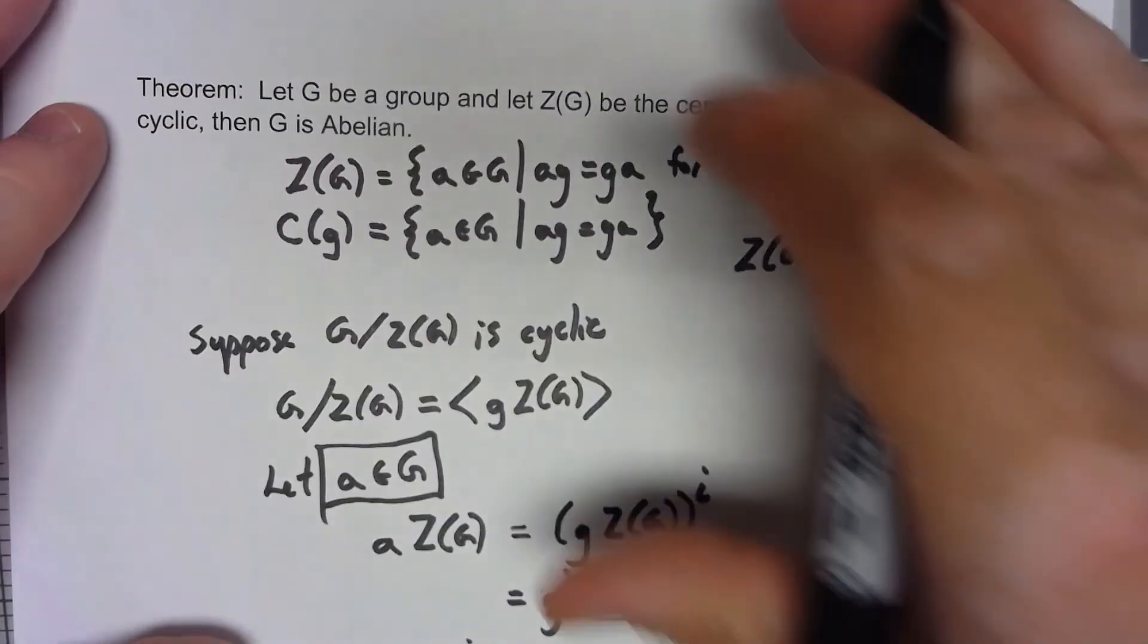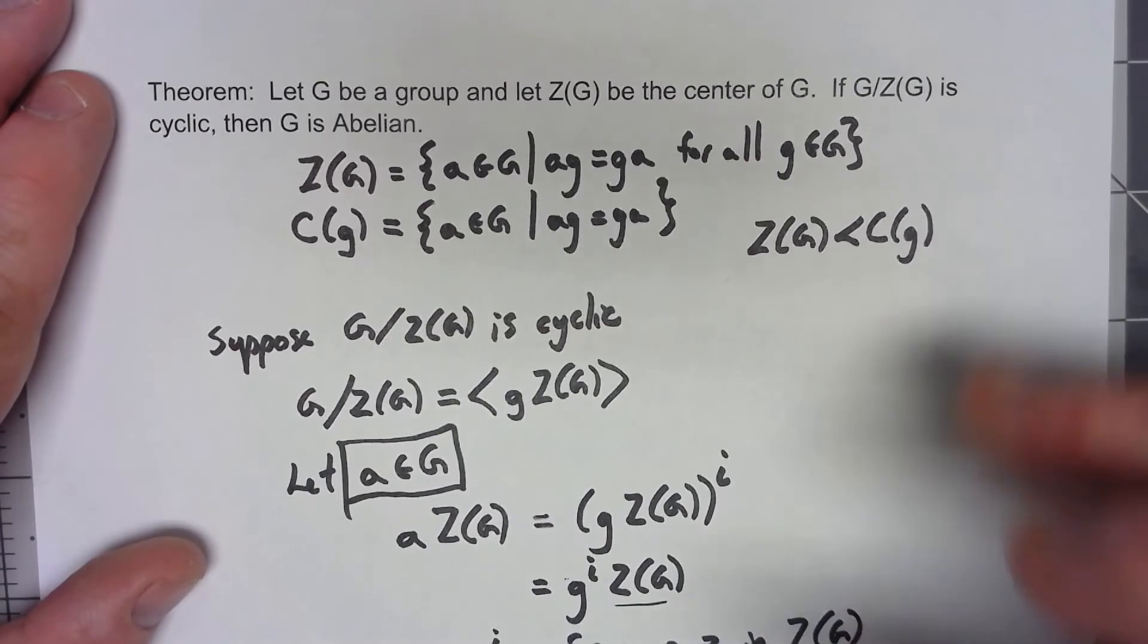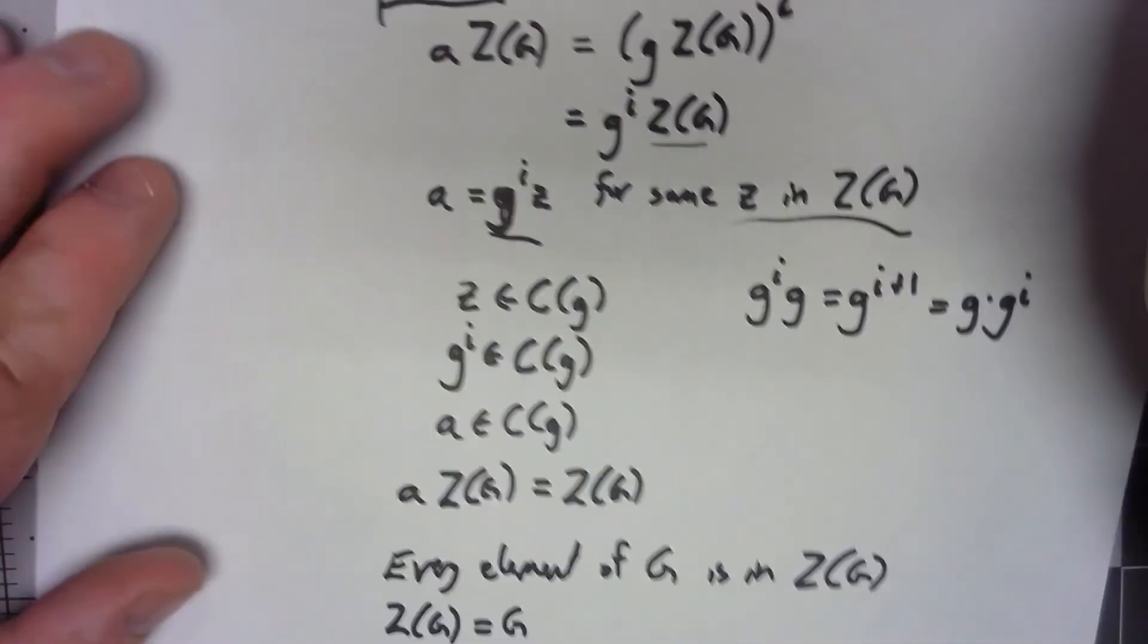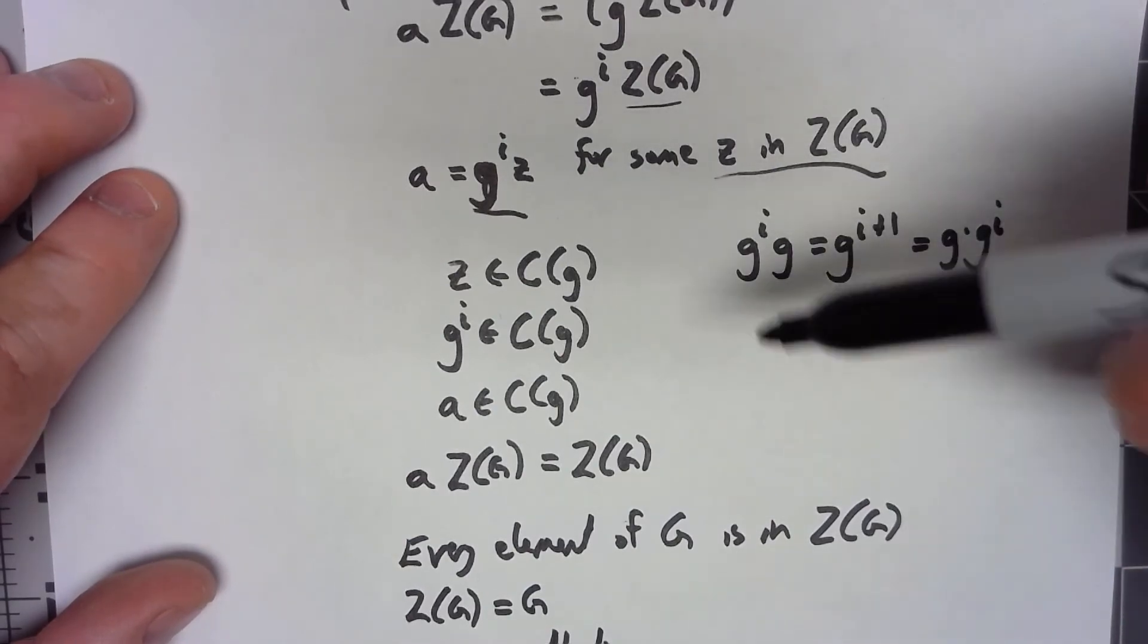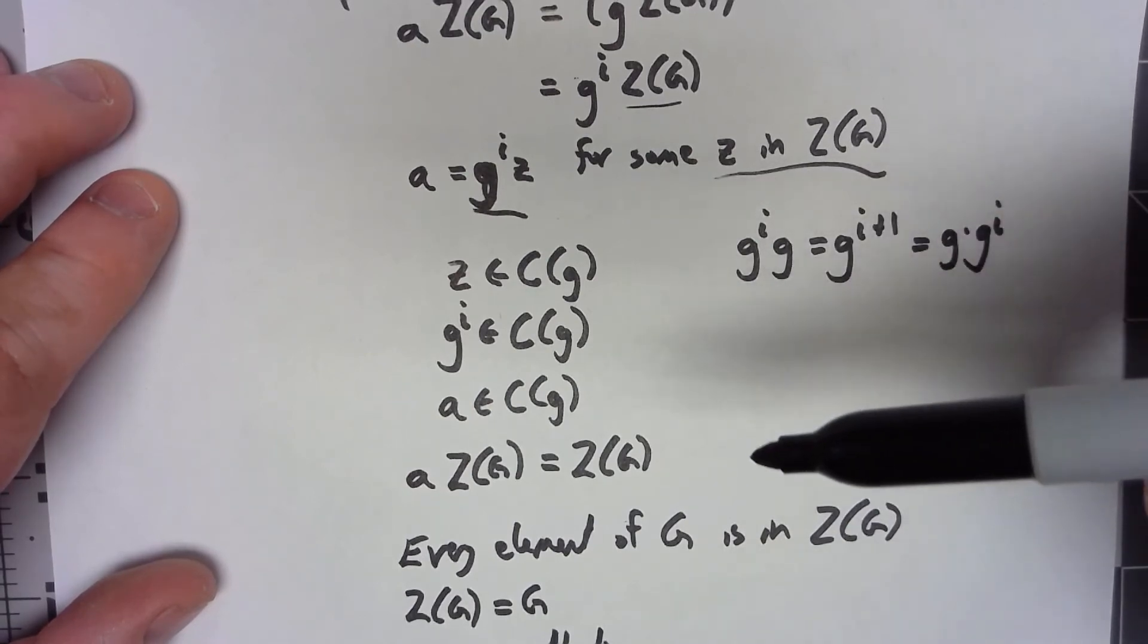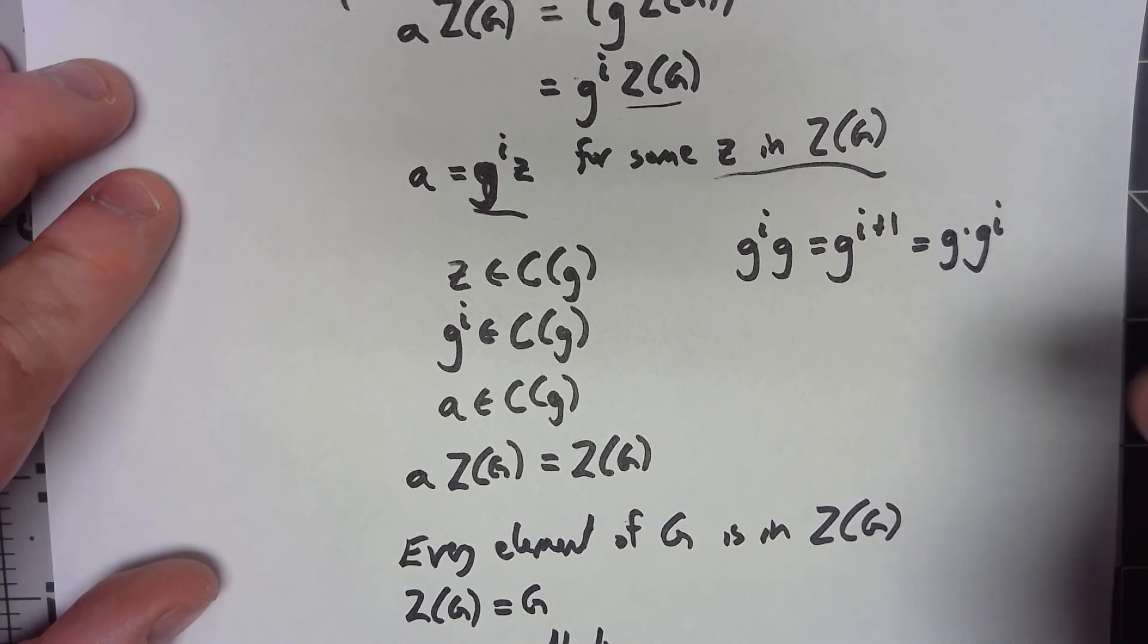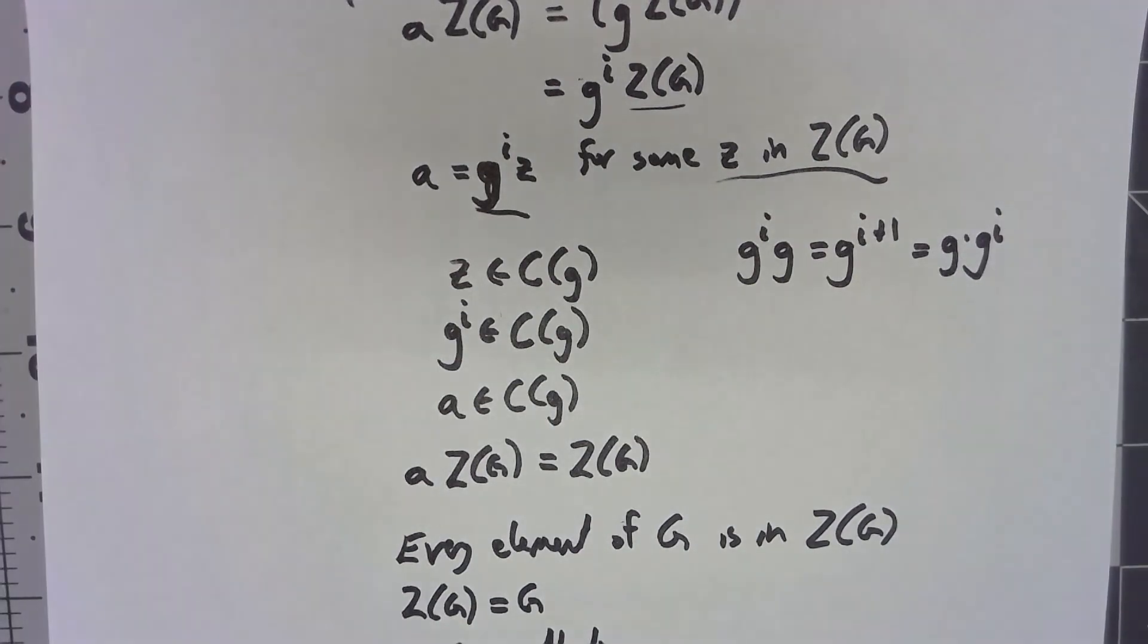Now, I don't know if this theorem by itself is really all that important. I don't see this being a very common way to show that a group is abelian. However, the proof itself is interesting in that we're using these factor groups. We're looking at properties of the factor group to show something about the group. By looking at a particular factor group, we can often learn things about the group in general.